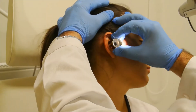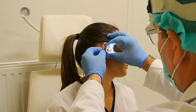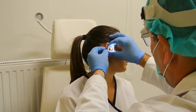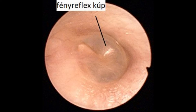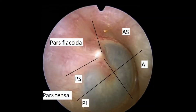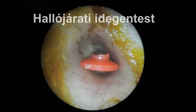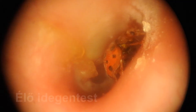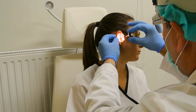For even better visualization, we should tilt the patient's head slightly towards the opposite shoulder. By doing this, we will be able to visualize the tympanic membrane and its structures, such as the light reflex, the lateral process of the malleus with the umbo, or check for different pathologic lesions in the ear canal or on the tympanic membrane.